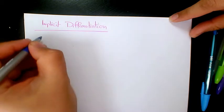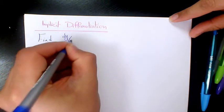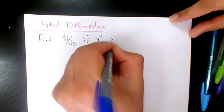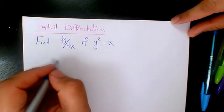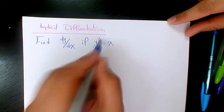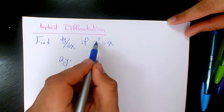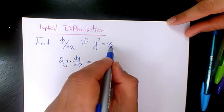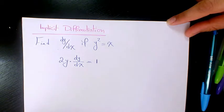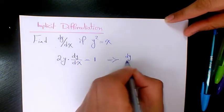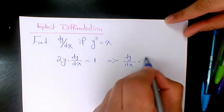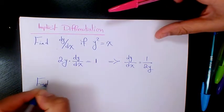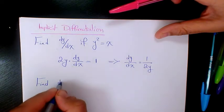The first example: find dy/dx, the derivative of y with respect to x, if y² = x. The derivative of y² is going to be 2y, and since y is a function of x we need to write dy/dx. The derivative of x with respect to x is 1. We isolate dy/dx and the final answer is 1 over 2y.